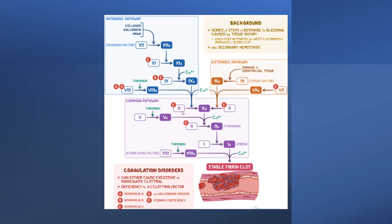Factor Xa combines with calcium. Thrombin also converts factor V to Va. Together they convert factor II (prothrombin) to IIa, which is thrombin. Thrombin then converts factor I (fibrinogen) to Ia, which is fibrin — thread-like fibers that form before the blood clots. The stabilizing factor XIII is activated by thrombin to XIIIa, which combines with calcium and fibrin (Ia) to form a stable fibrin clot.